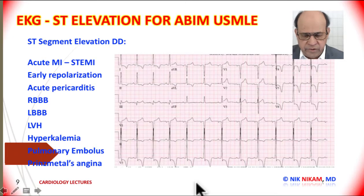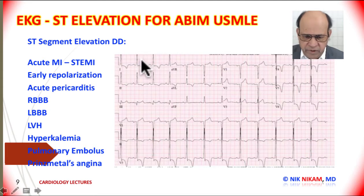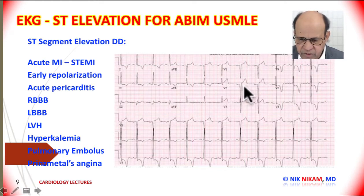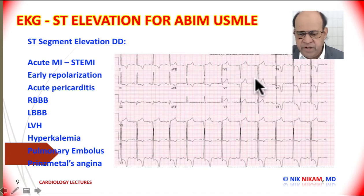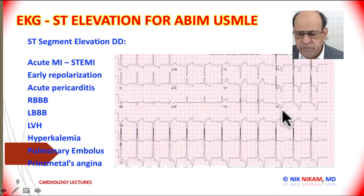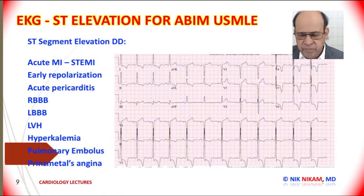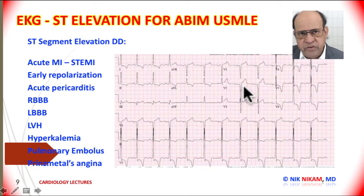Do you see ST segment elevation? In this electrocardiogram we see some ST depression, but also ST elevation in V1, V2, and V3. Along with that, we have increased negative voltage in V2 and increased voltage in V6, and left atrial enlargement. We are dealing with an electrocardiogram reflecting left ventricular hypertrophy with strain, which also causes ST segment elevation in the anterior leads. This is important to remember because when these patients present with chest pain, we may mistake this for an acute STEMI.